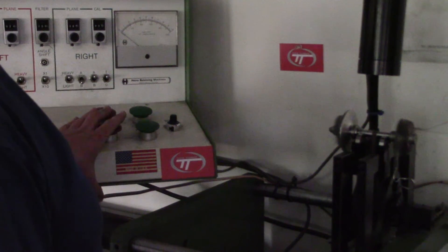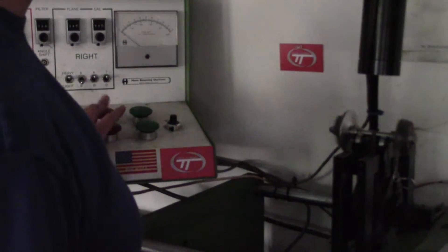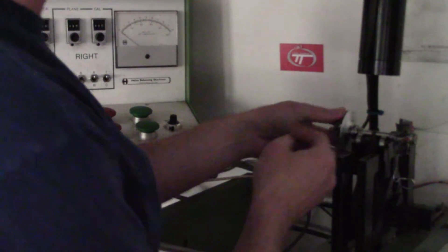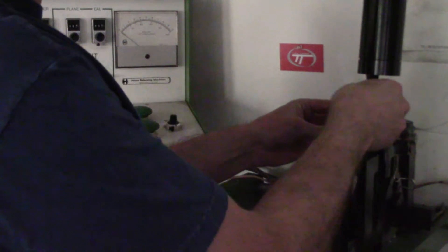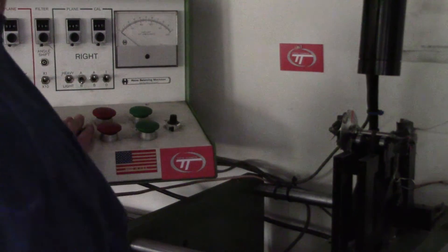So the first thing we do is make sure everything's spinning freely. And then what we're going to do is put a known weight on the compressor. So this is usually just over a couple grams on that weight.